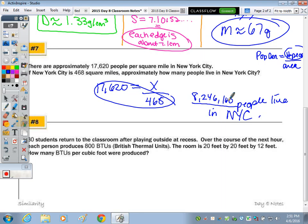Last one, number eight. It says there are 30 students return to the class after playing outside for recess. Over the course of the next hour, each person produces 800 BTUs. So how many total BTUs do we have if there's 30 people and they each produce 800? There's going to be 24, yes, because 8 times 3, but then how many zeros? So we have 24,000 BTUs.